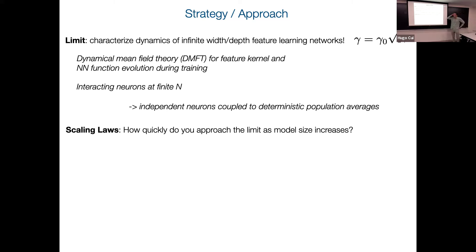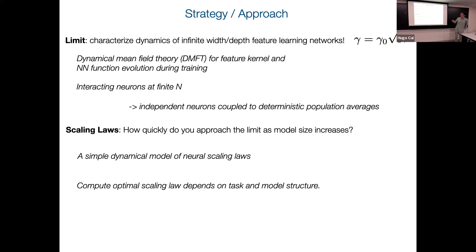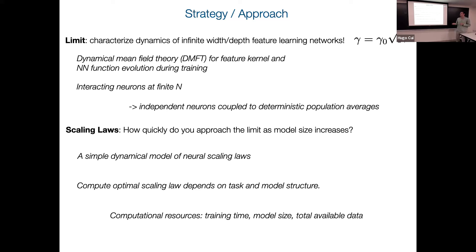The second part of the talk is: can we explain how quickly you approach this limit? As I make the model size and parameter count bigger, how fast do I converge? We're going to look at a simple model of binary scaling laws where we think about training dynamics. There's going to be some budget of training time, model size, and total data. We try to figure out what properties of the initial kernels and the data determine how to optimally choose model sizes and training times.